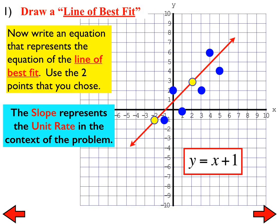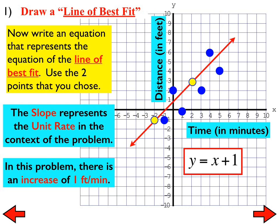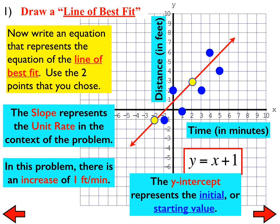So, the slope represents the unit rate. Remember that from several days ago in the context of the problem. So, let's pretend that this graph represents time versus distance. So, in my problem, that means that there is an increase of one foot per minute. That's the unit rate for this problem. How do I know that? It is y equals x plus one, but you still haven't answered why it's one foot per minute. The slope is one. The slope right here is one. And the slope leads us to the unit rates. And in terms of this problem, it's distance per time. So, it's one foot per minute. And when we do number two, I'm going to put you in a situation like this. Y-intercept represents the initial or the starting value. We will get to that in our next lesson.